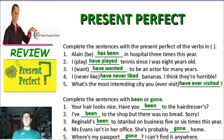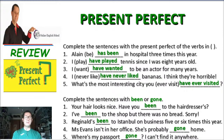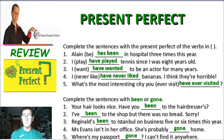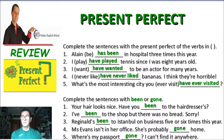Now we have to complete sentences with "been" or "gone." Number one: "Your hair looks nice — have you been to the hairdressers?" Number two: "I've been to the shop, but there was no bread." Number three: "Reginald's been to Istanbul on business five or six times this year." Number four: "Miss Evans isn't in her office — she's probably gone home." Number five: "Where's my passport gone? I can't find it anywhere."